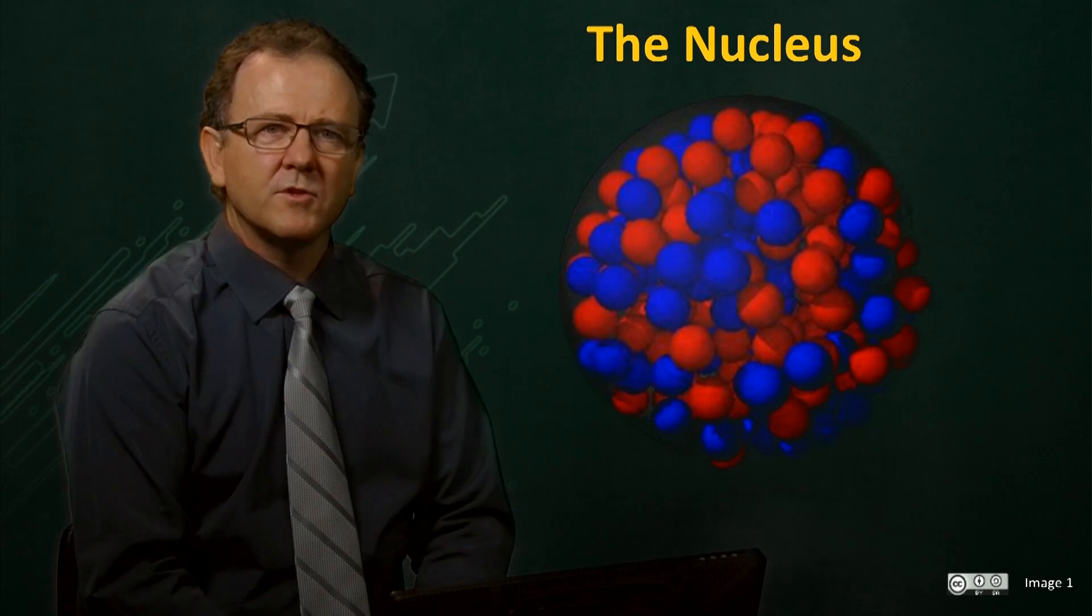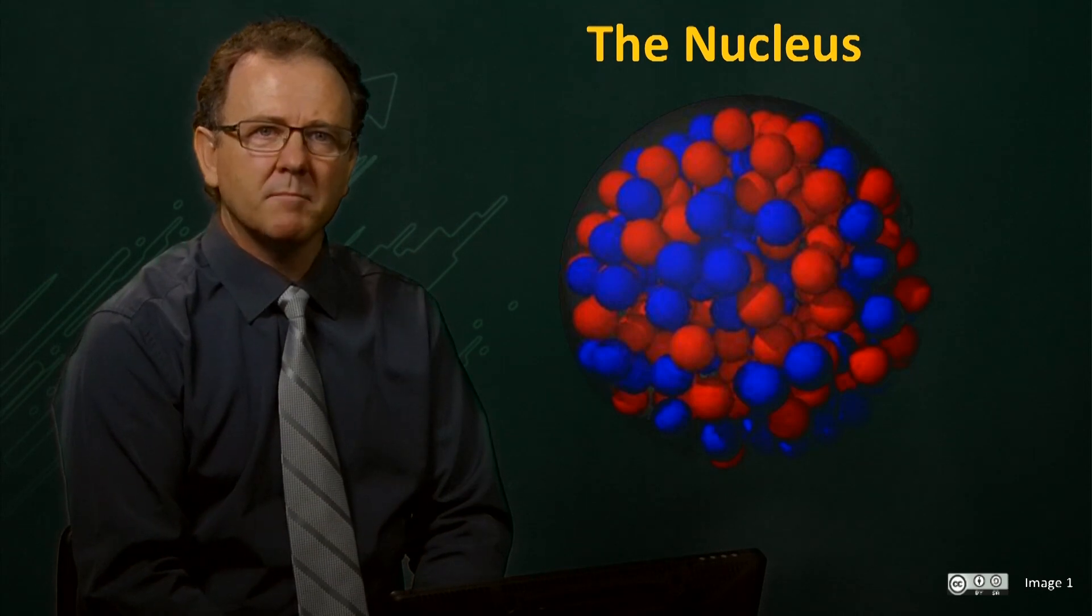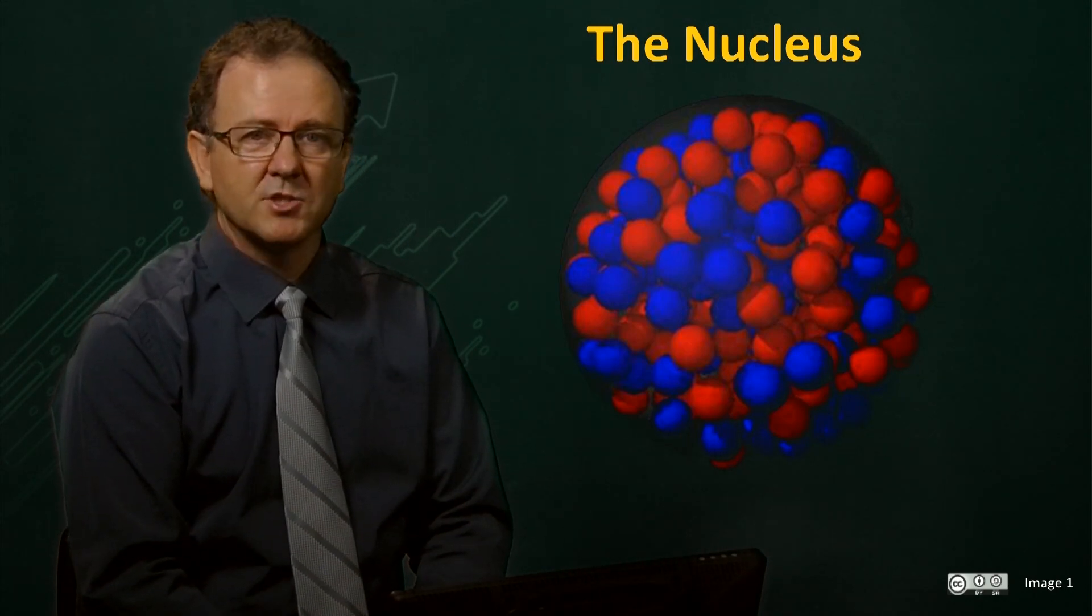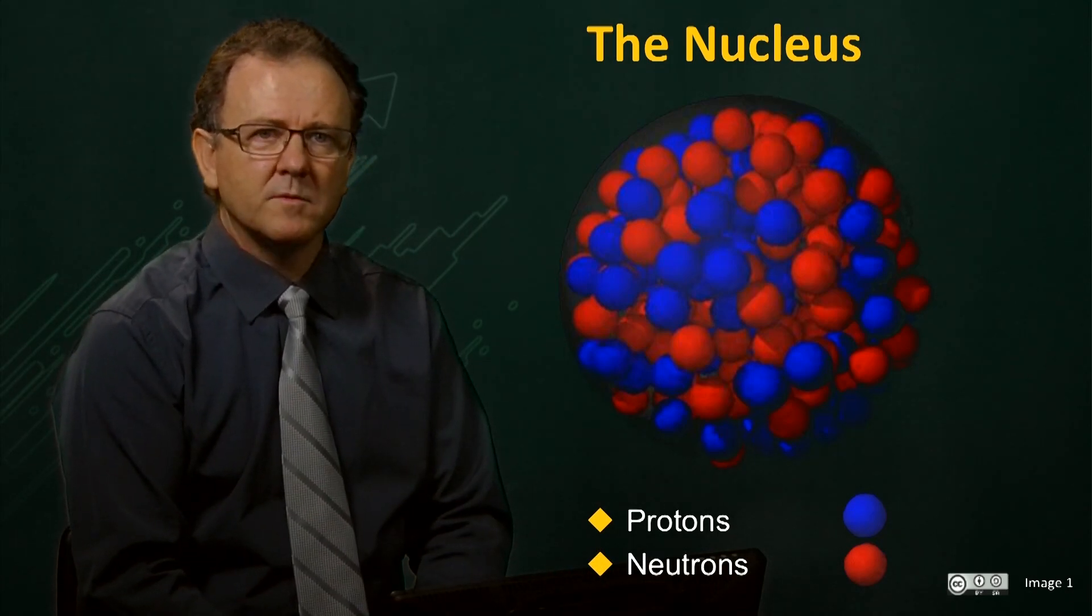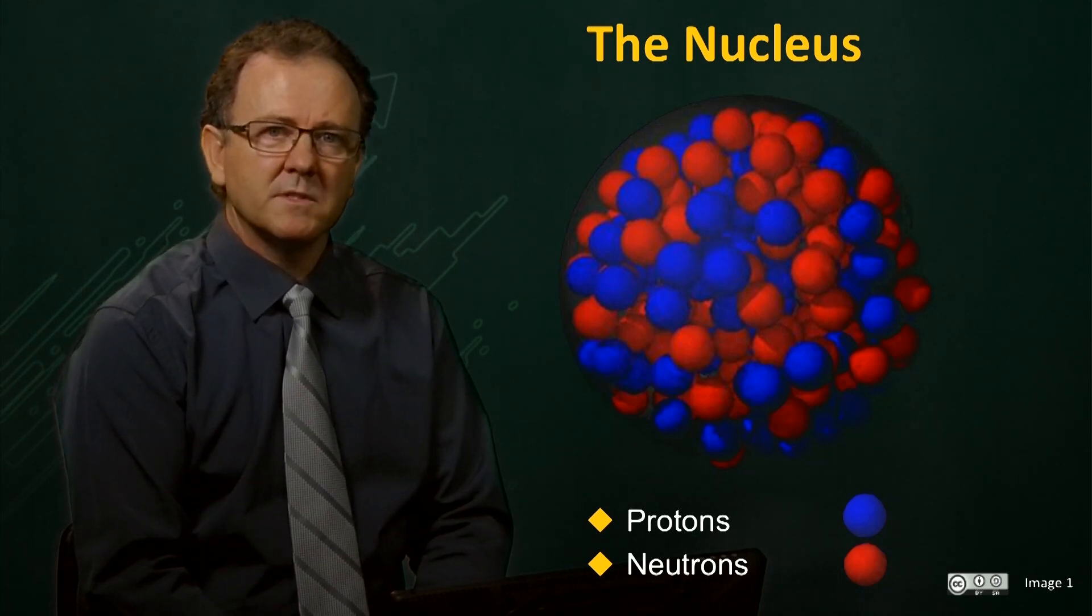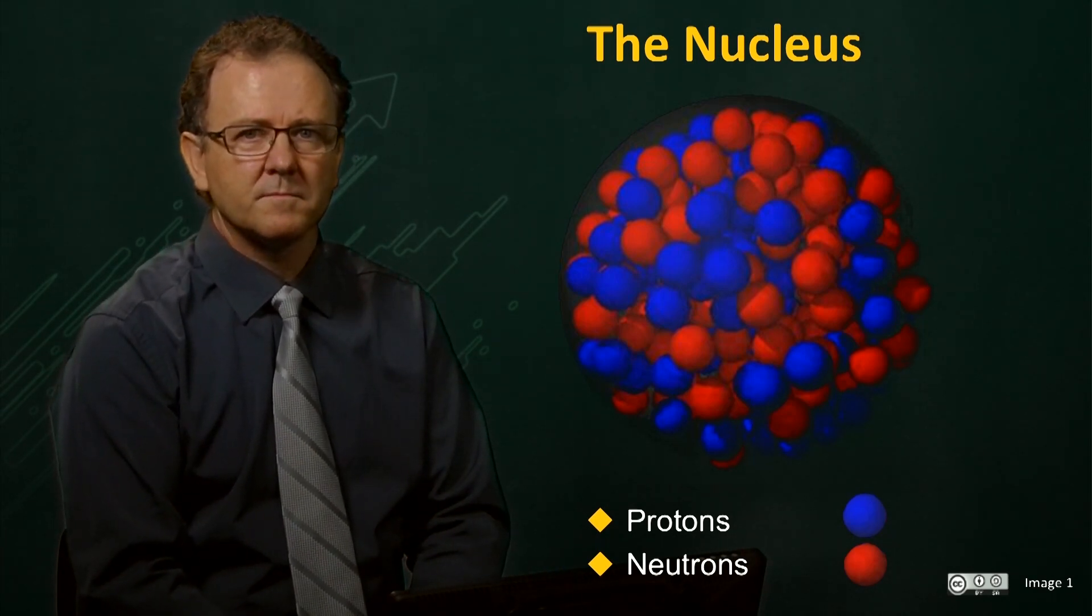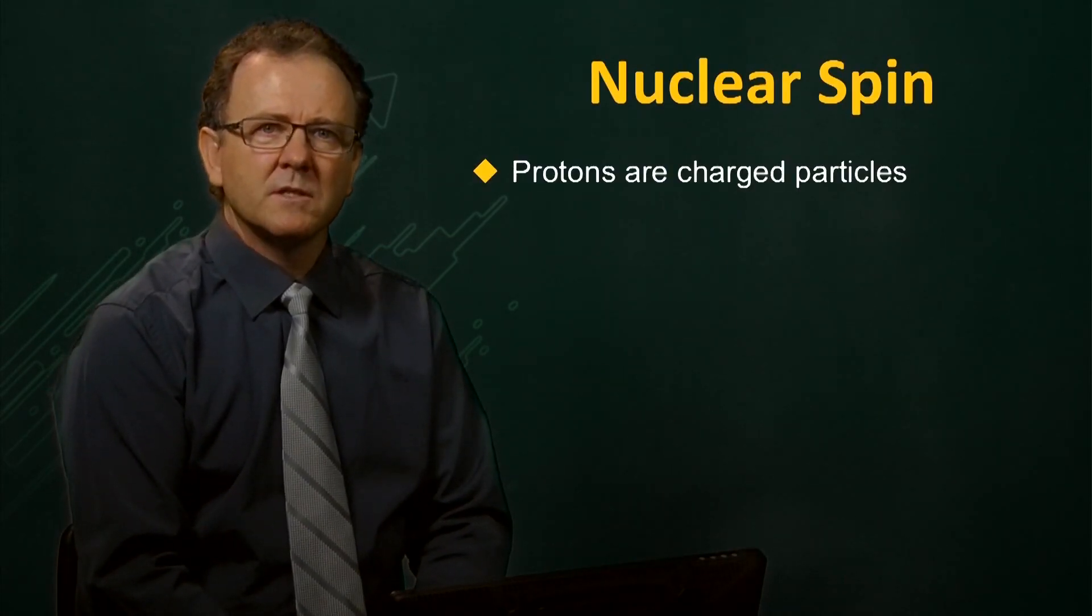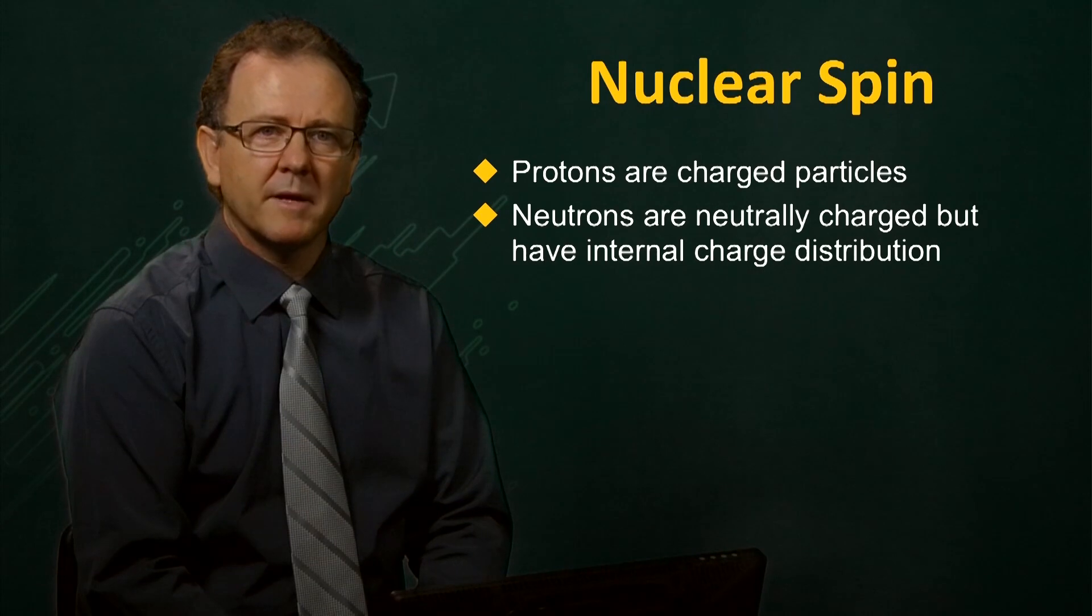Atoms are comprised of a nucleus and its orbiting electrons. All nuclei are composed of a number of particles, the most important being positively charged protons and neutrally charged neutrons. Protons have a charge equal but opposite to the electron, and neutrons are overall neutral but have distributed charge.